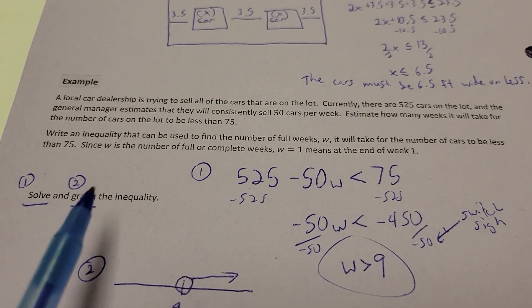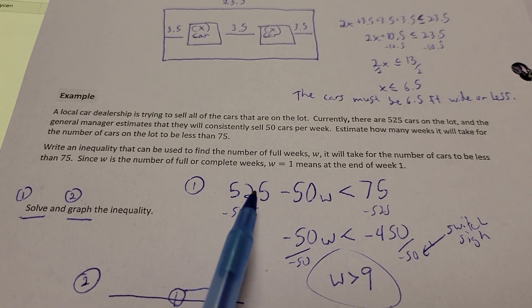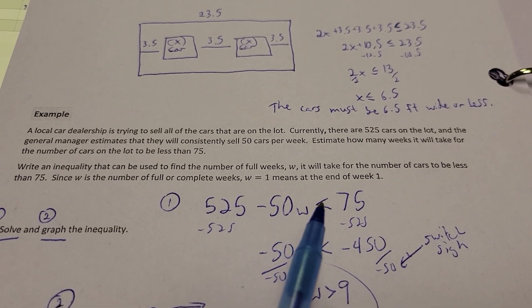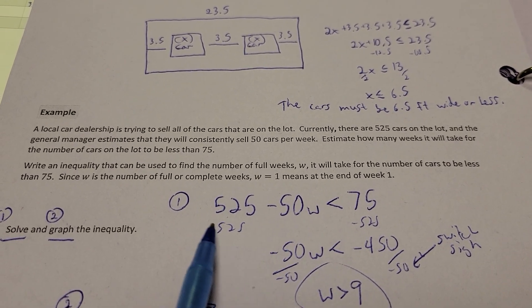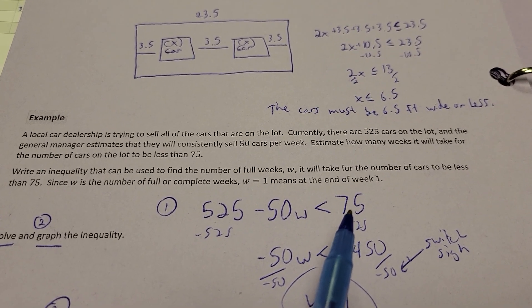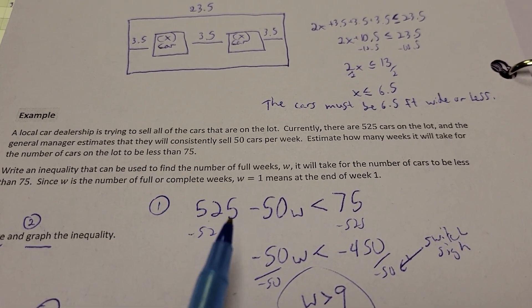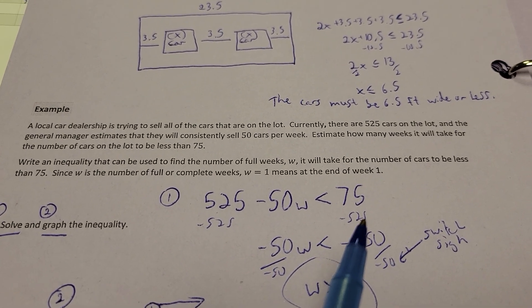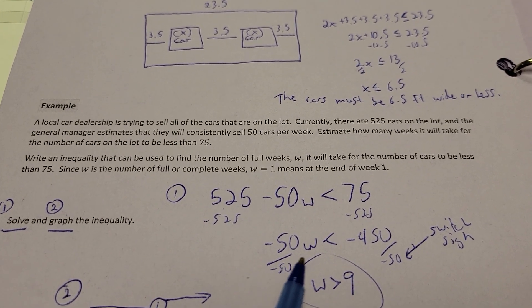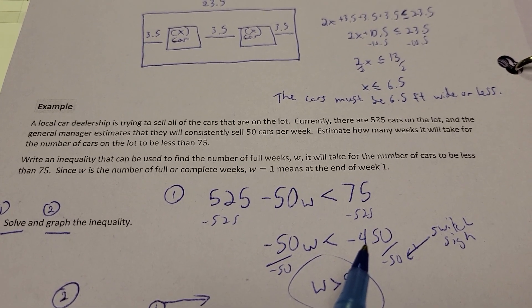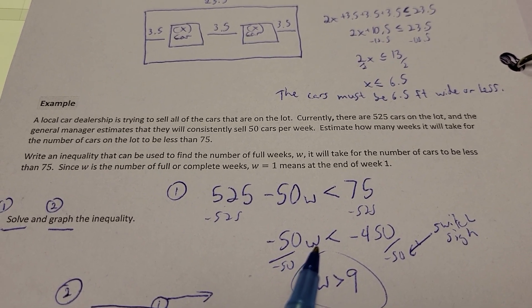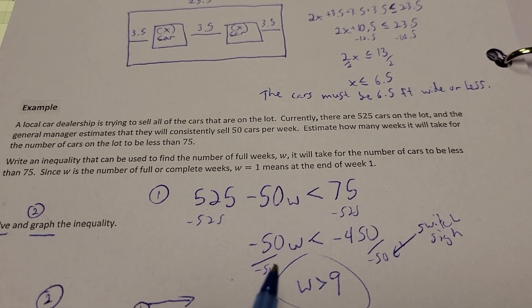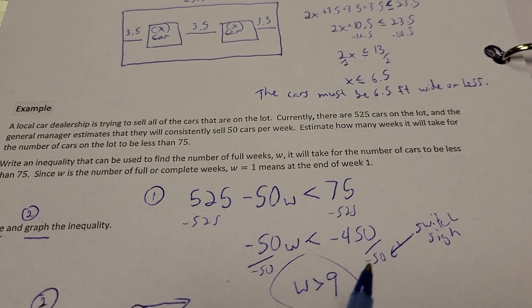Since W is the number of full complete weeks, W equals 1 means the end of week 1. Alright, so we're going to solve it and graph it. So, we've got 525, and we're going to take away or sell 50 cars per week, so minus 50W. Now, we have to get this number, our total of cars here, has to be less than 75 because we want to be less than 75. So, what I do is I took away the 525 first and put me in some negatives over here, but that's okay.